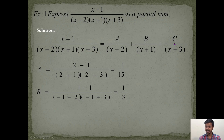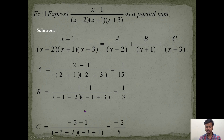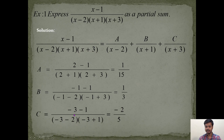Now pause the video and find the value of C the same way. To find C: the factor is (x + 3), so x = −3. Put x = −3 in the left-hand side covering the (x + 3) term: (−3 − 1) / [(−3 − 2)(−3 + 1)]. After simplification, C = −2/5.